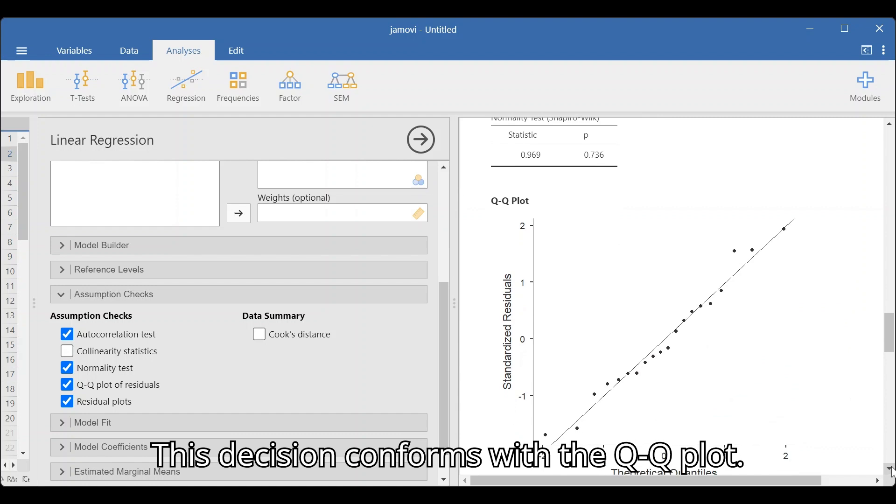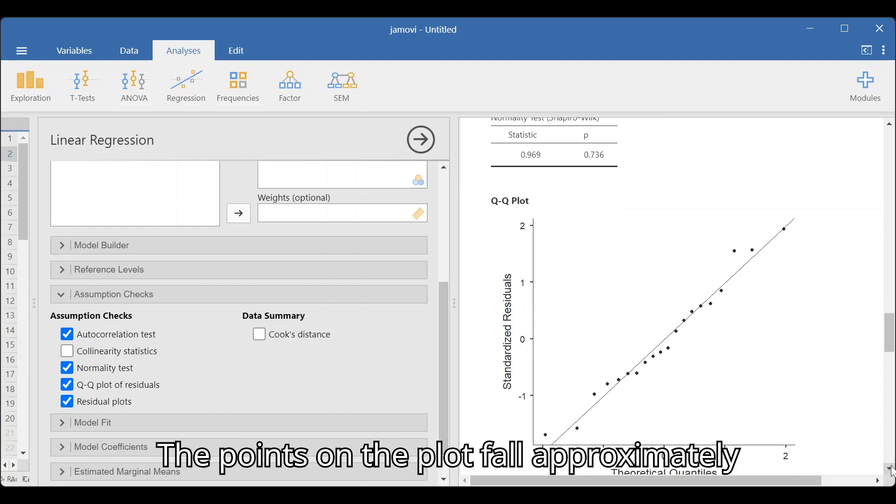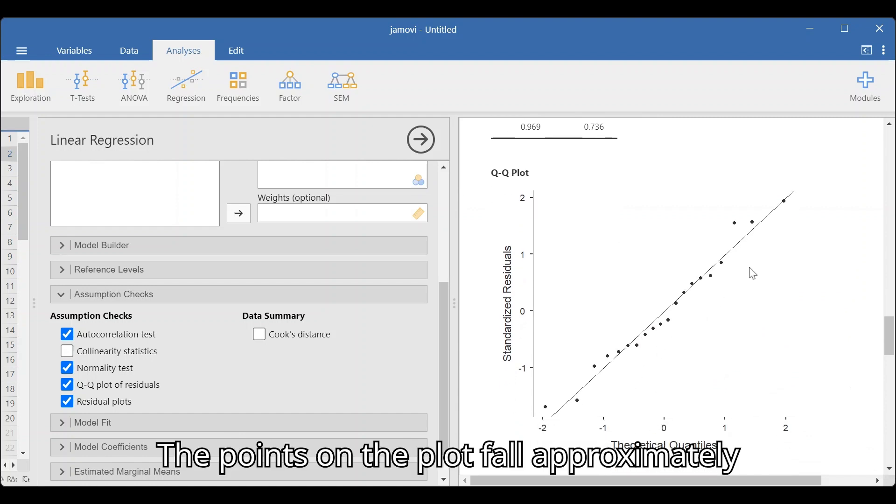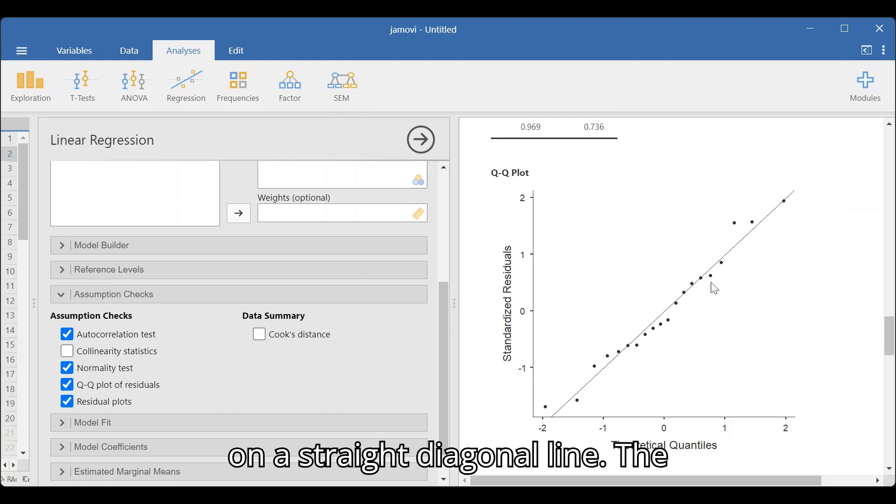This decision conforms with the QQ plot. The points on the plot fall approximately on a straight diagonal line. The closer the points are to this line, the stronger the evidence for normality.